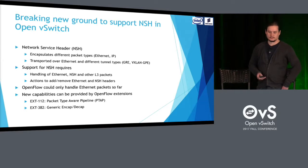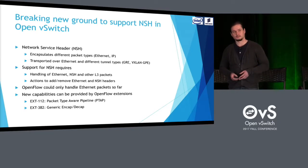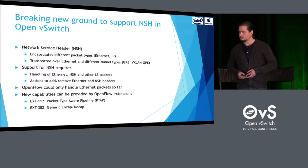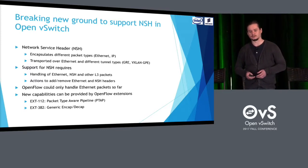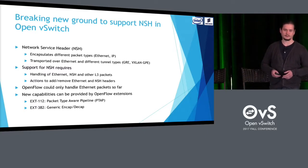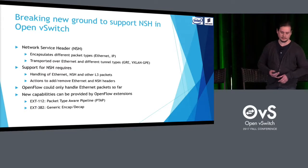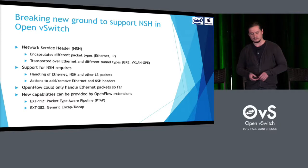NSH is a standard for network service header. It's a service header which can be used to create service function paths or service function chains in networks. It encapsulates different packet types, typically Ethernet or IP. For transport, it can use either an outer Ethernet header or a generic transport tunnel, such as GRE or VXLAN GPE. Support for NSH requires handling of Ethernet, NSH, and other layer 3 packets, and also requires actions to add and remove Ethernet and NSH headers.